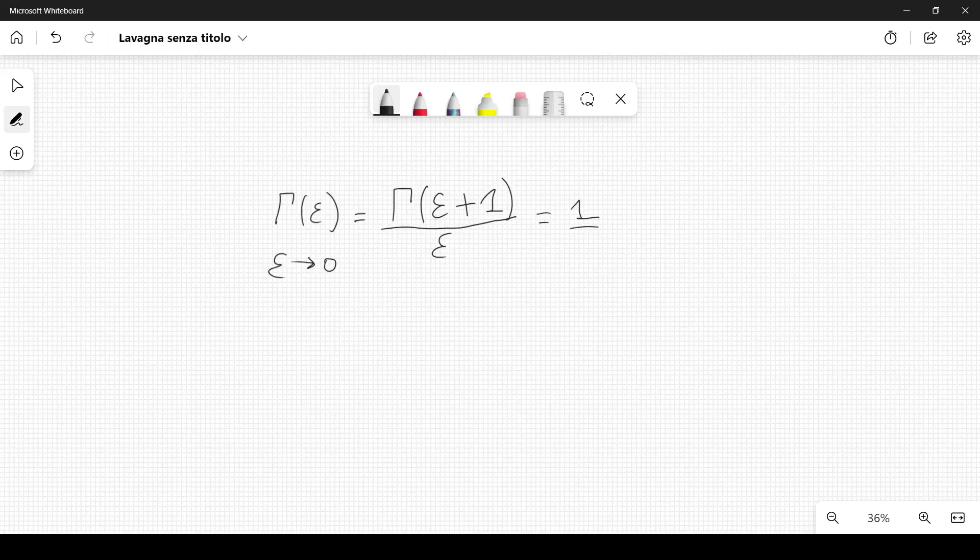This can be written as 1 over epsilon, integral from 0 to infinity dx, x to the epsilon, e to the minus x.